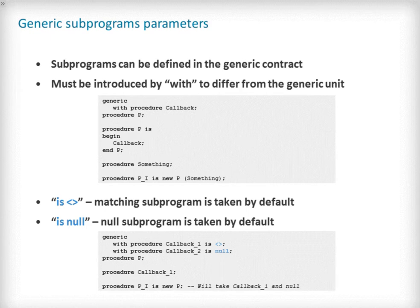At instantiation of P, the subprogram something is provided as the generic parameter callback. It is possible to specify that defaults should be used if no parameter is specified at instantiation. The default can either be a subprogram matched by name or a null subprogram. The final example on this slide shows a default instantiation and how a matched subprogram has been found by name for the default of callback_1, and null has been used for the default of callback_2. I would like to reiterate that the compiler is able to check the consistency of all aspects of the generic contract.